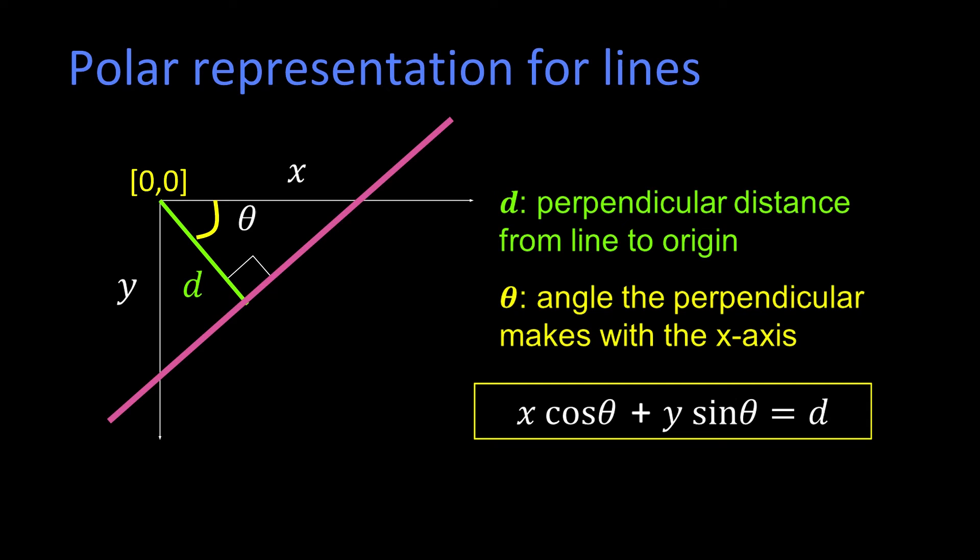You can have any direction you want—theta can go however it wants to go, and you can go right through the origin. D can be zero, or it can get as big as you need it to go.